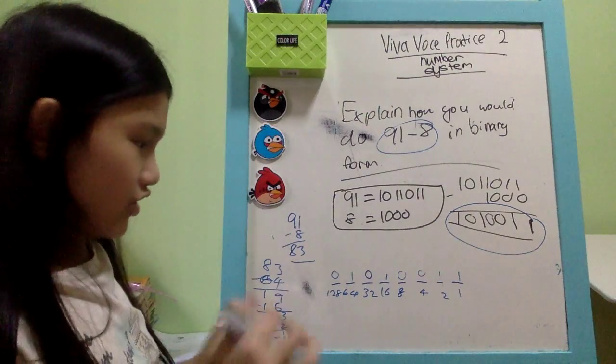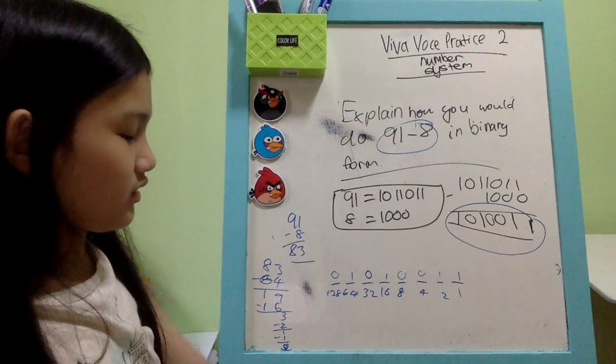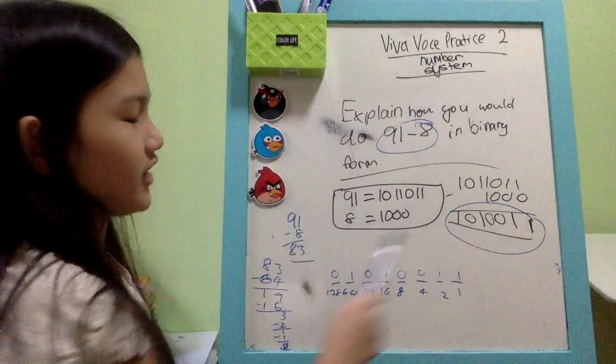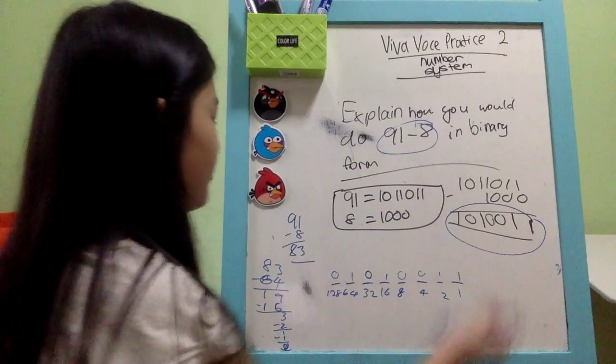Alright, so this is how you convert 83 to a binary number. So it will be like that. This is the number. Okay, so the number is actually